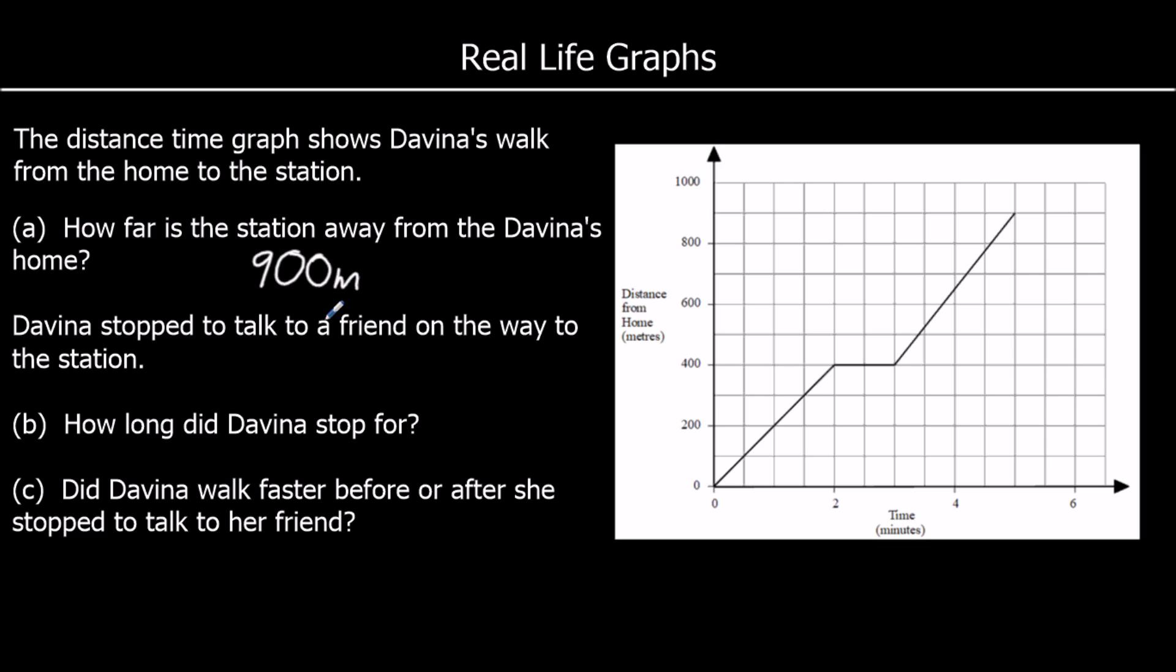Davina stopped to talk to a friend on the way to the station. How long did she stop for? So you can see where she's not moving is where the distance time graph is flat. So she's not getting further away from home. In this part, in the flat part of the graph. So she stopped. And that is, well, it's one minute. So this is one minute, three minutes, five minutes. So from two minutes to three minutes is one minute. So she stopped for one minute.